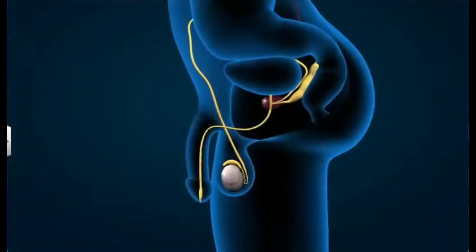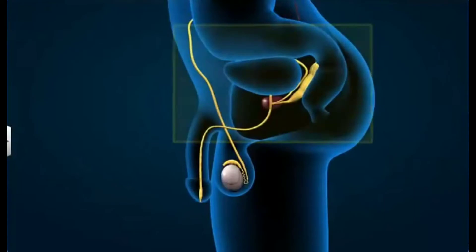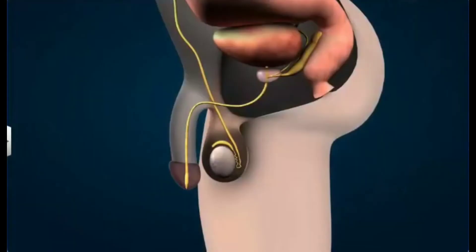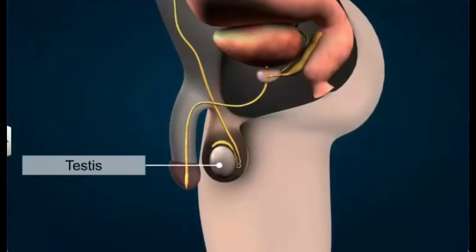The male reproductive system is located in the pelvic region. It includes the testes, accessory ducts, accessory glands, and external genitalia.